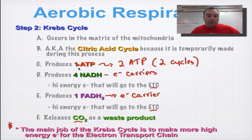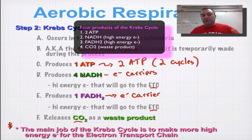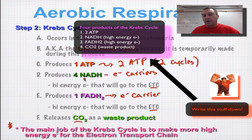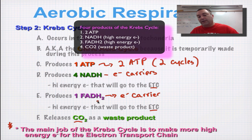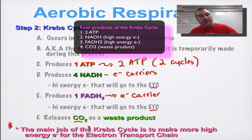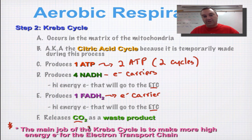Quick review: you're going to make four things during the Krebs cycle. You make some ATP which your body uses to do work, but by far the most important thing is high-energy electrons — most carried by NADH, some by FADH2 — which move on to the electron transport chain to make more ATP. And you make a waste product, carbon dioxide, that you breathe out, which will also be one of the reactants for photosynthesis.